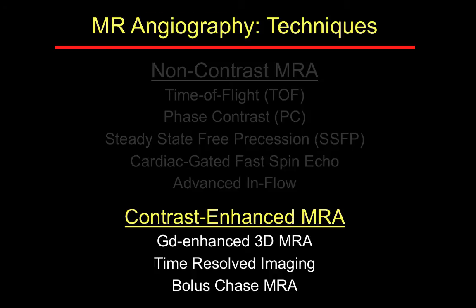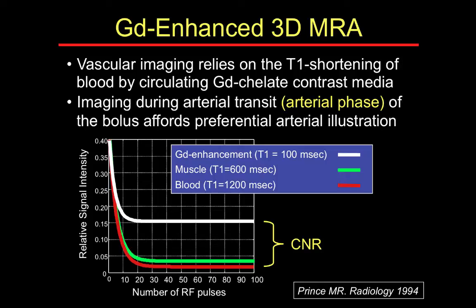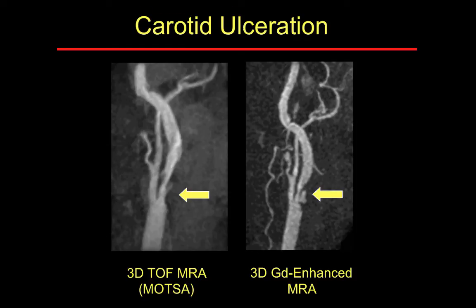Getting to contrast-enhanced MRA techniques, the principle of gadolinium-enhanced MRA is fairly straightforward. You generate a luminogram whereby the arrival of gadolinium chelate into the target vasculature creates T1 shortening and image contrast between the arterial bed and background tissue. Here's an example comparing gadolinium-enhanced MRA to a standard non-contrast 3D time-of-flight MRA: the patient has an ulcerated plaque, barely visible on time-of-flight but very clear on the gadolinium-enhanced MRA, which shows the vessel lumen much more clearly.